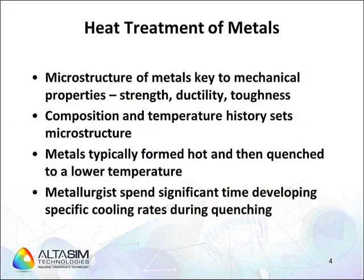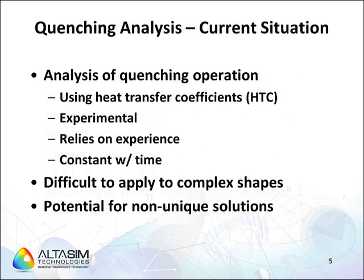The mechanical properties of metals develop due to the microstructure. Strength, ductility, and toughness can all be altered based on the composition of the metal and the temperature history of the part. The forming process typically occurs at an elevated temperature. The quenching operation seeks to control cooling to develop a specific set of mechanical properties. These cooling rates may vary dramatically within the quenched part and produce unwanted mechanical properties within the part. To estimate the cooling within a part, metallurgists typically analyze their quenching operations using heat transfer coefficients. These HTCs are often developed through a combination of experience and experimentation and are specified as being constant with time as the part cools down.